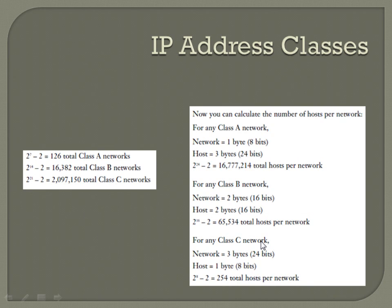Those are the classful networks. It's important to differentiate between a classful network and a classless or variable length network. Class A has a total of 126 networks, Class B has 16,382, and Class C has over 2 million. A classful Class A IP address gives you 16 million hosts, and there's no reason you should need that many — you should be segmenting it up. That's when we get into VLSM, Variable Length Subnet Masking, to break down classful networks into more usable IP ranges.